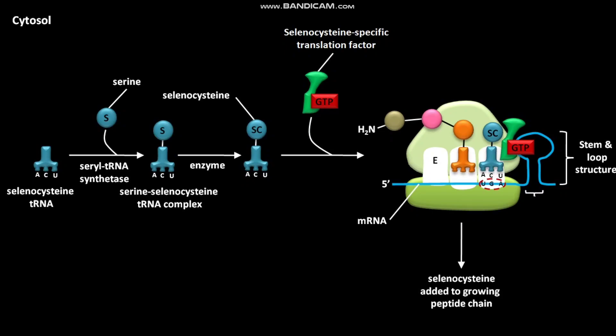This is the signal that the preceding UGA encodes selenocysteine. Usually, UGA is a stop codon, but in this case, this UGA stop codon base-pairs with the anticodon of the tRNA bound to selenocysteine.